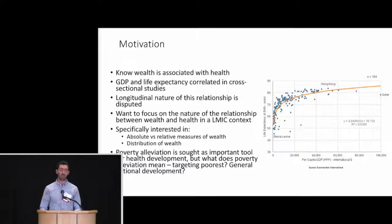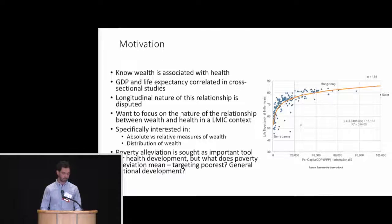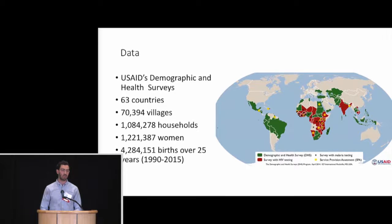So the mortality of children before the age of five. A little background on the data I'm using: DHS is demographic and health surveys, collected by USAID. They are extensive household surveys, and in different countries they cover different things, but the commonality is they always cover maternal and child health extensively. They'll interview a woman in a household and ask about her entire birth history, and in particular the outcomes of each of those births — whether or not there's a live birth, whether or not the child survived to five years old.